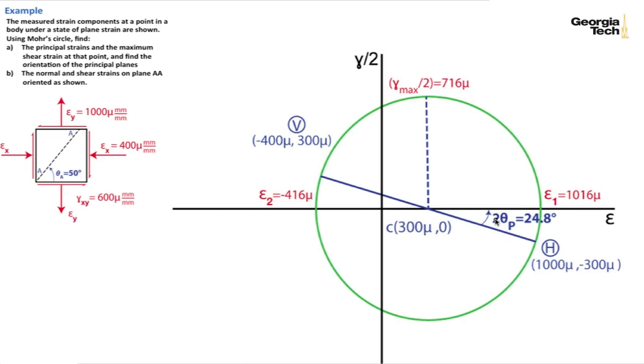Now we want to do Part 2, which is the normal and shear strains on plane AA. For plane AA, we're rotating 50 degrees counterclockwise on the stress block. So theta sub A equals 50 degrees on the stress block. So 2 theta sub A is going to be 100 degrees on Mohr's Circle.